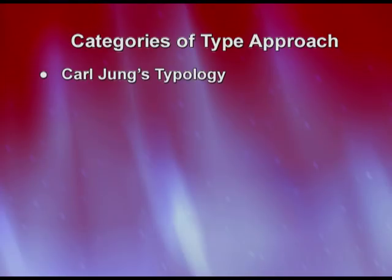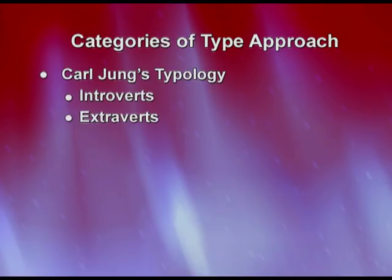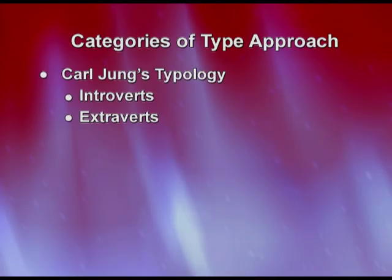Next is Carl Jung's typology under the type approach. Carl Jung talked about two categories: introverts and extroverts. Introverts prefer to be alone, tend to avoid others, withdraw during conflict, and are shy. Extroverts are very sociable and outgoing — they always look for company and crave interaction with other people.